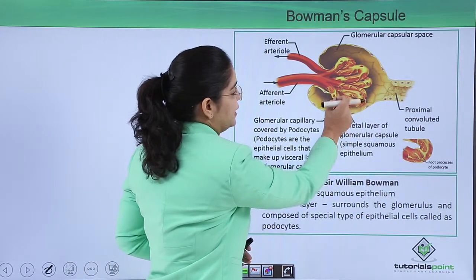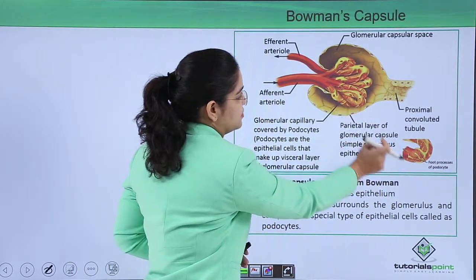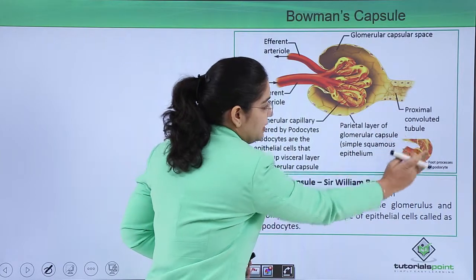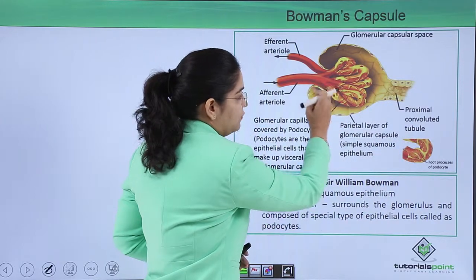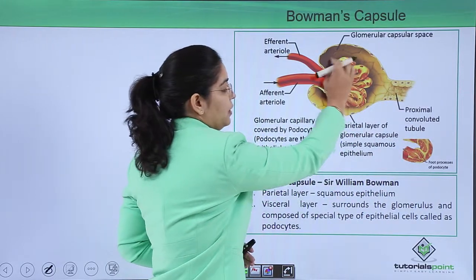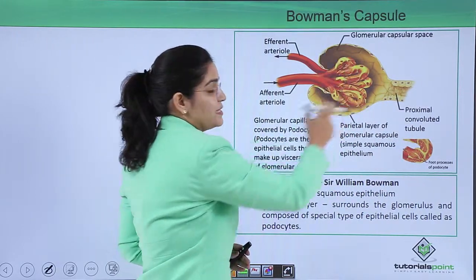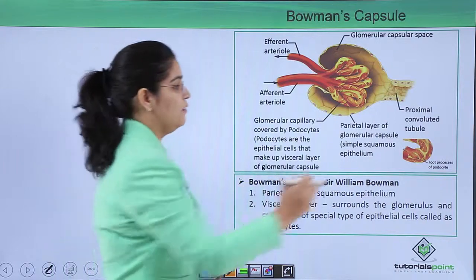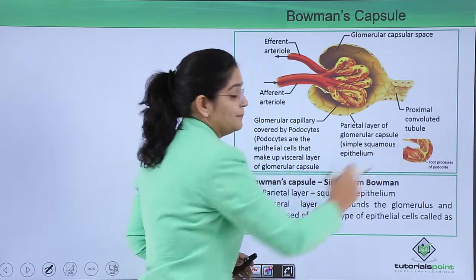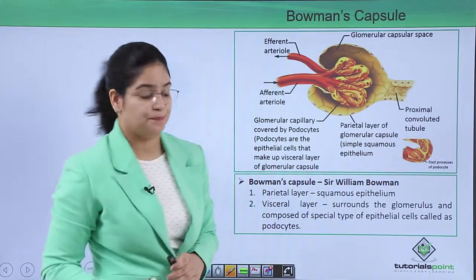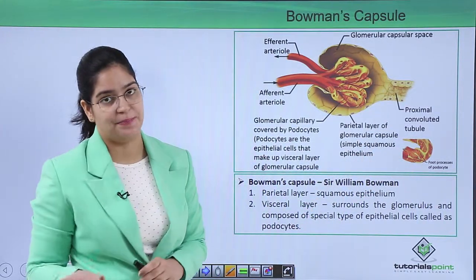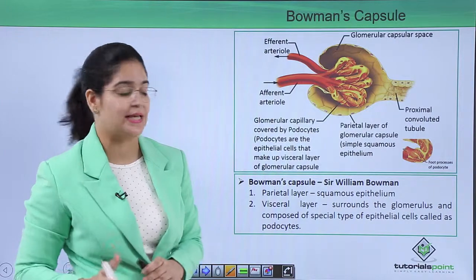So two layers are present in Bowman's capsule: first the parietal layer, which is the outer layer made up of squamous epithelium.